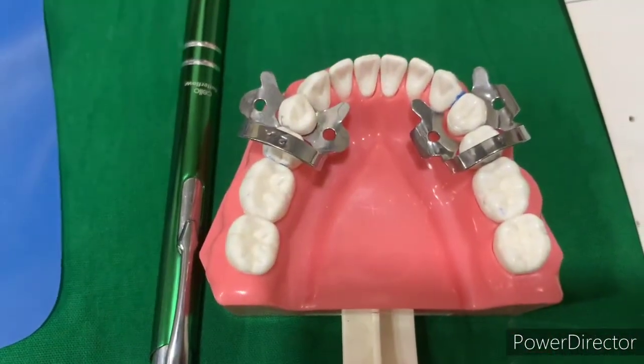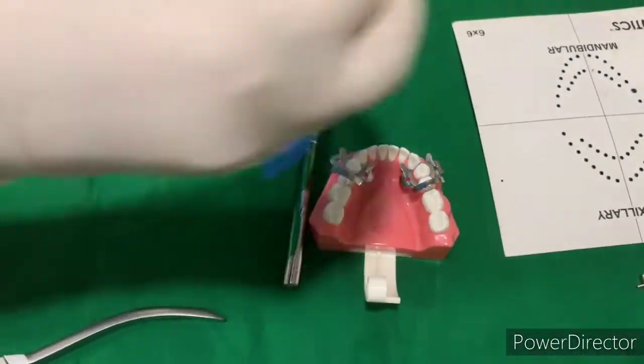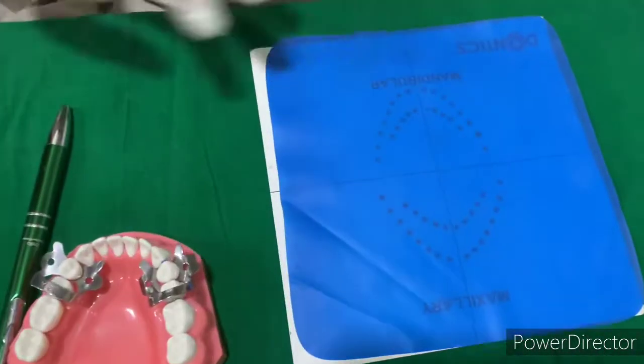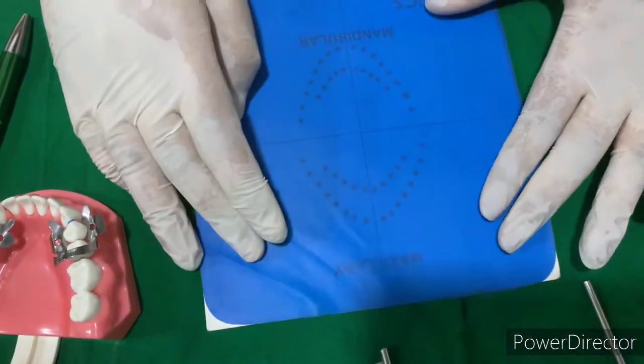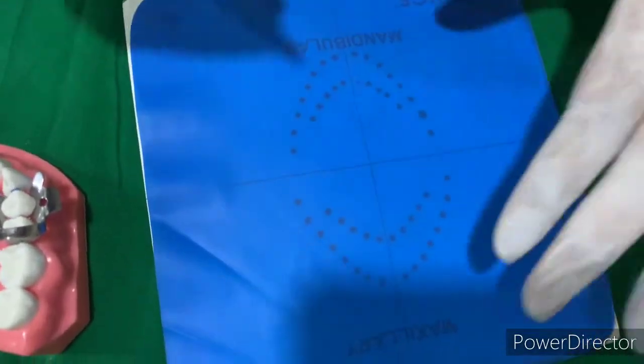Now the selection of clamp is done. We'll mark the tooth numbers on the sheet with this template, from canine to canine.